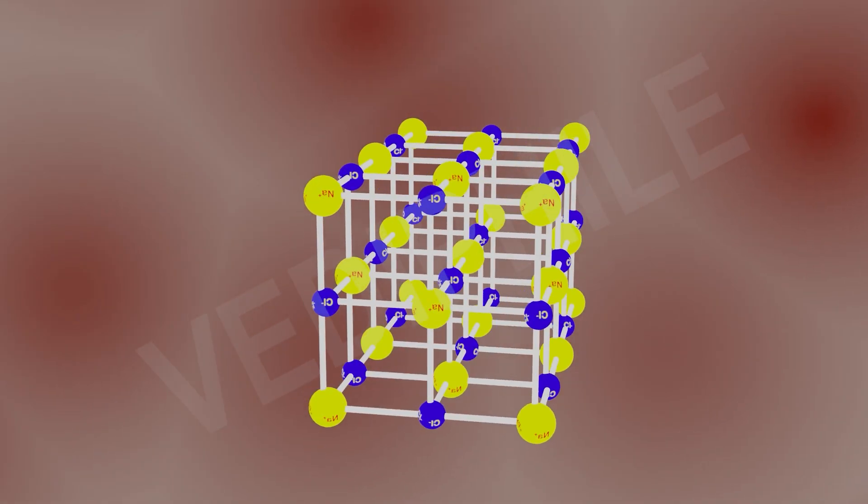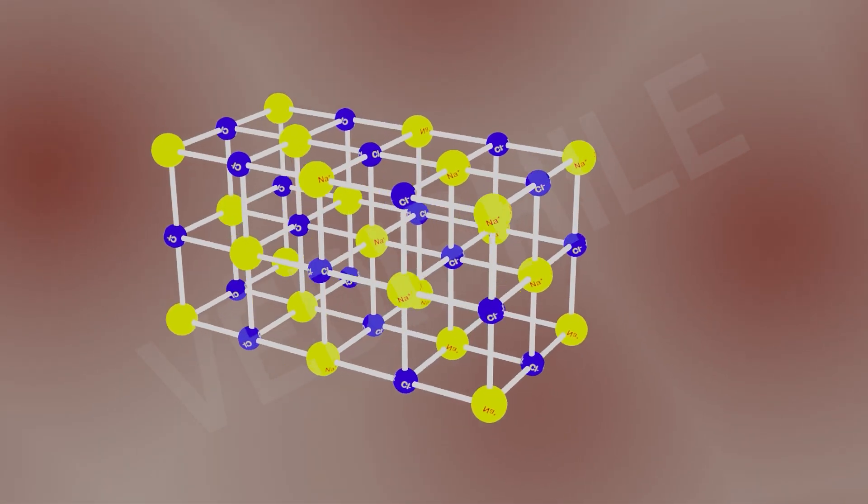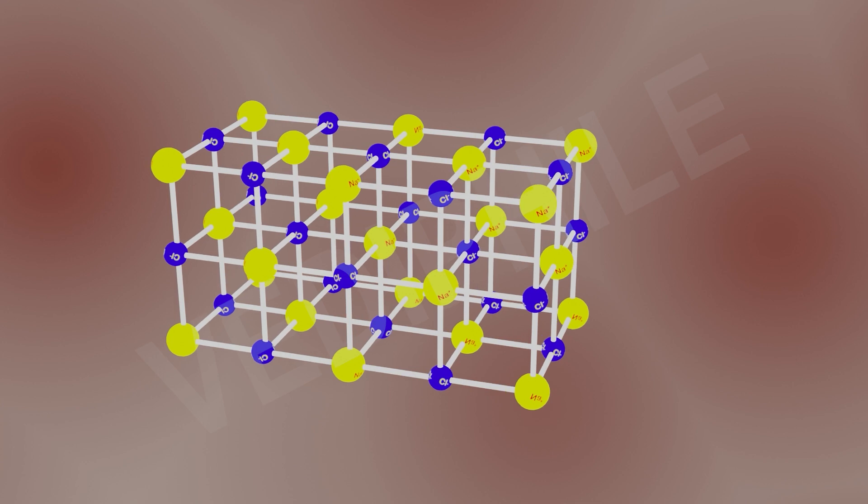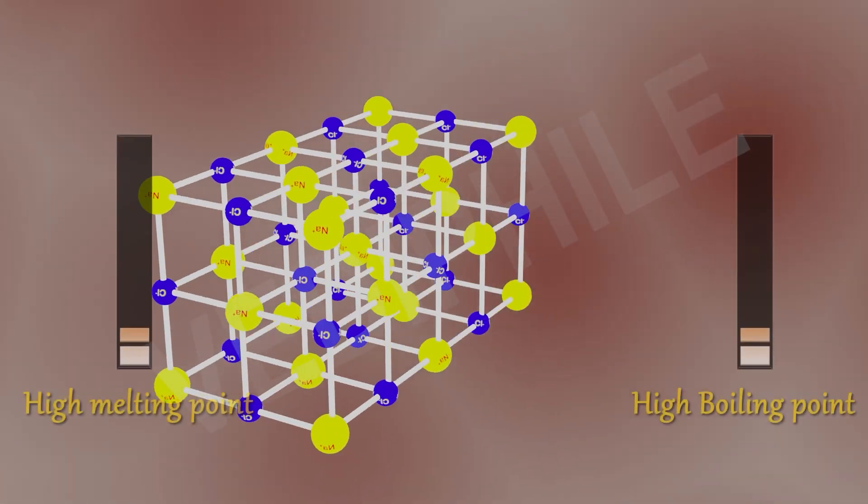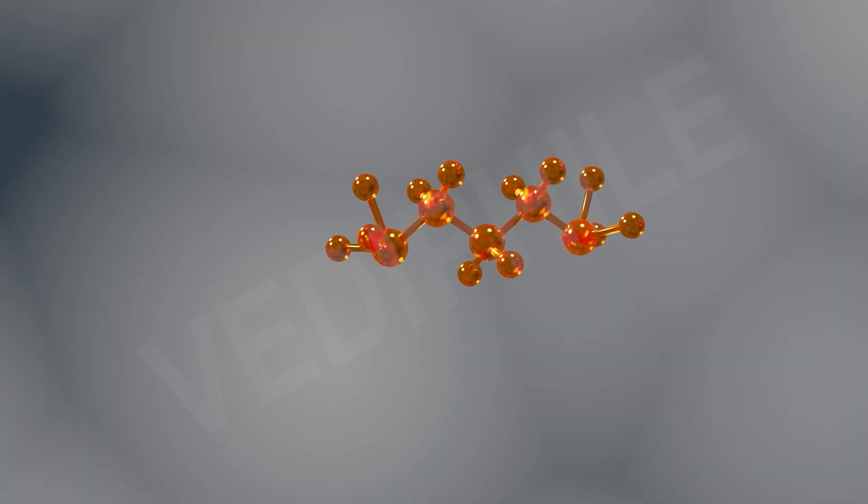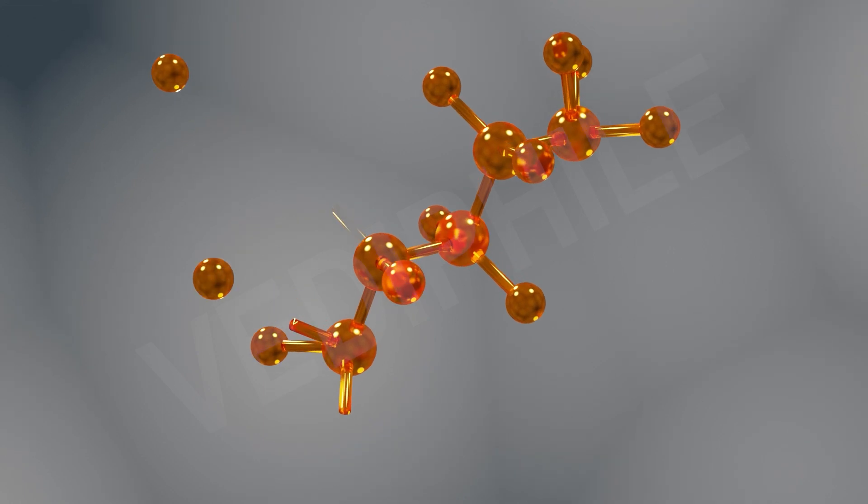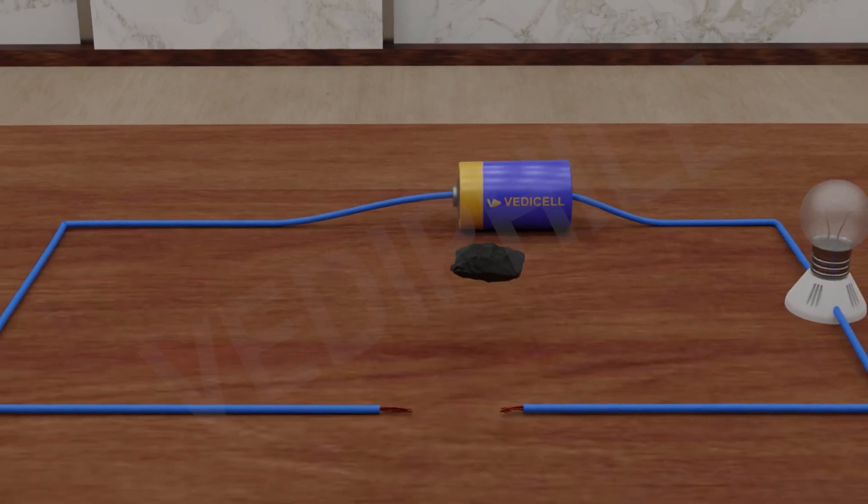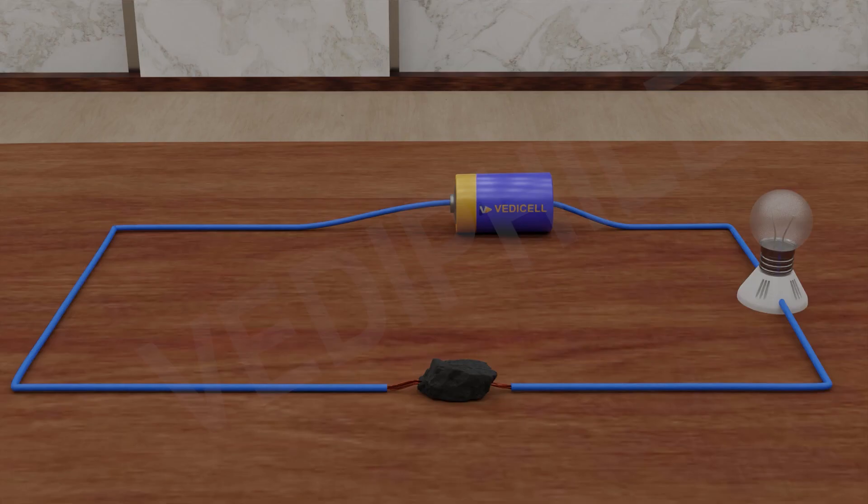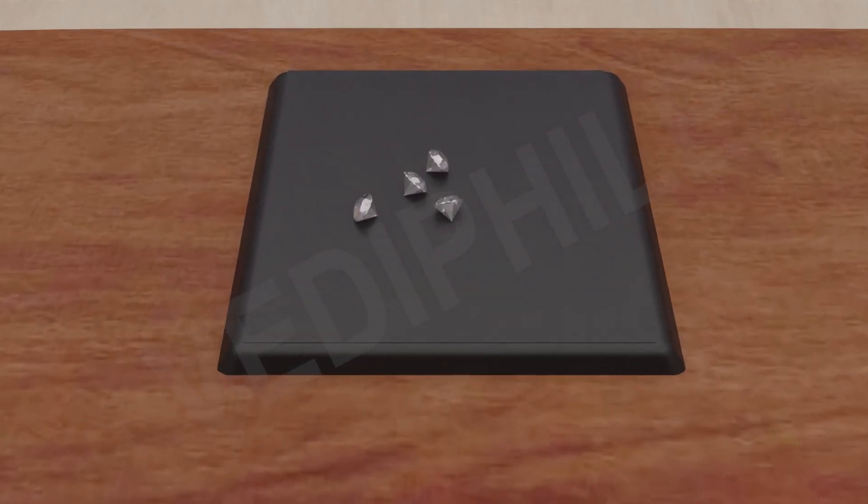In ionic compounds, strong electrostatic forces exist between positively and negatively charged ions, leading to higher melting and boiling points. Since carbon compounds do not form ions and have weak intermolecular forces, they do not readily conduct electricity. In carbon compounds, the lack of ions and the absence of mobile electrons hinder their ability to conduct electricity.